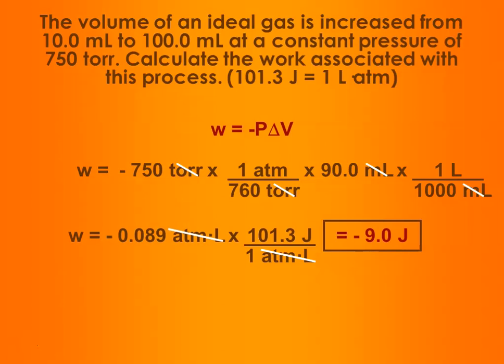You could also use this to find Q if you had the mass of the gas, the specific heat of your gas, and the temperature change the gas went through. Then you could combine Q and W together to calculate your change in internal energy, delta U.